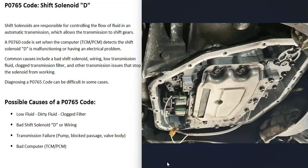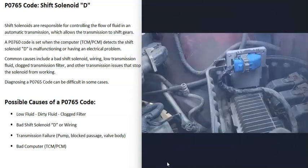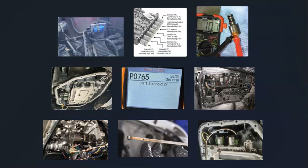The last possible cause is a bad computer. This isn't too common with a P0765 code, but it does happen. It could be a bad transmission control module or a bad powertrain control module. If you think you have a computer issue, make sure your battery is good and, if possible, check your alternator output, because these computers need a good stable power supply or they can act erratically. Make sure it's getting good power and a good ground.